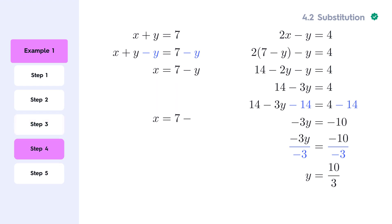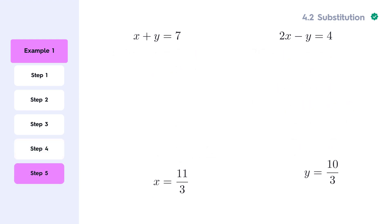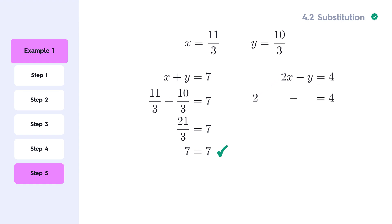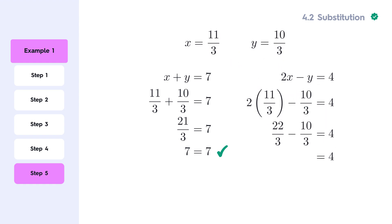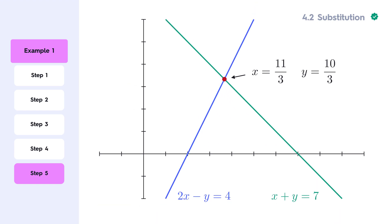We can now substitute this value back into the equation x equals 7 minus y, to find the value of x. For our last step, we can now check our solution by plugging both values into the original system of equations. Thus, the solution to the system of equations is x equals 11 over 3, and y equals 10 over 3.